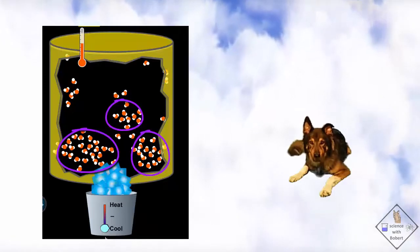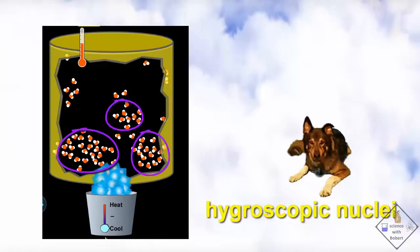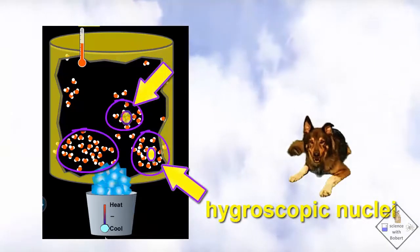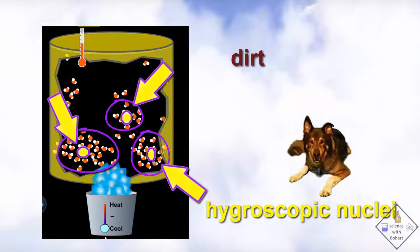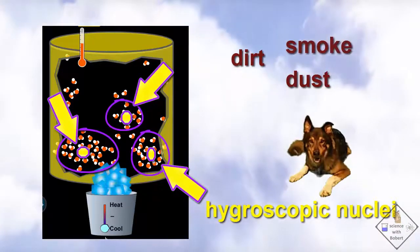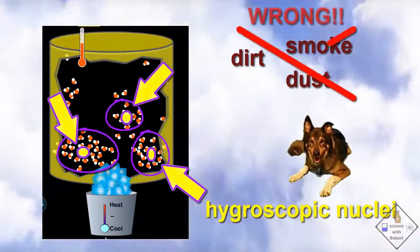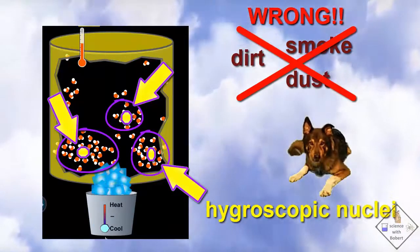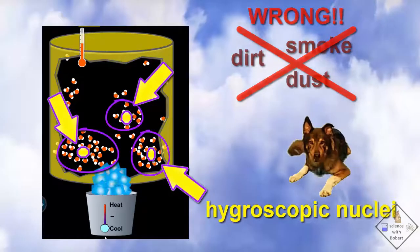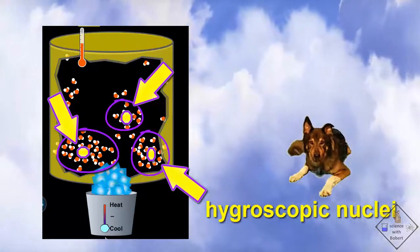Scientists call these particles hygroscopic nuclei. Now, what is even more interesting is what do you think hygroscopic nuclei in our clouds consist of? Dirt? Dust? Smoke? Those would be good guesses, but they are all wrong. Scientists have found that the hygroscopic nuclei in Earth's clouds are most often small particles of salt.